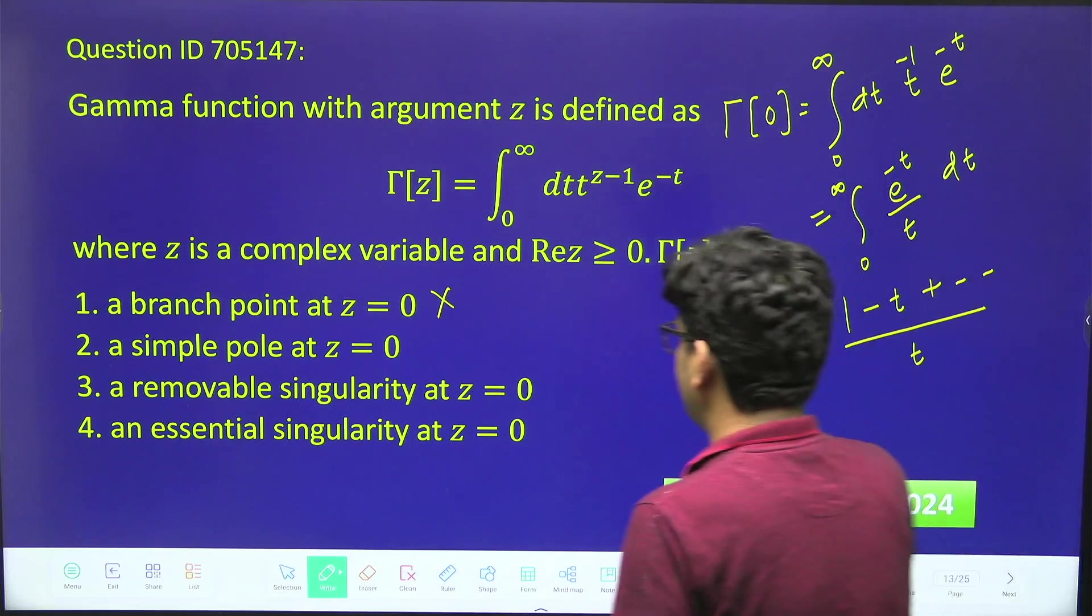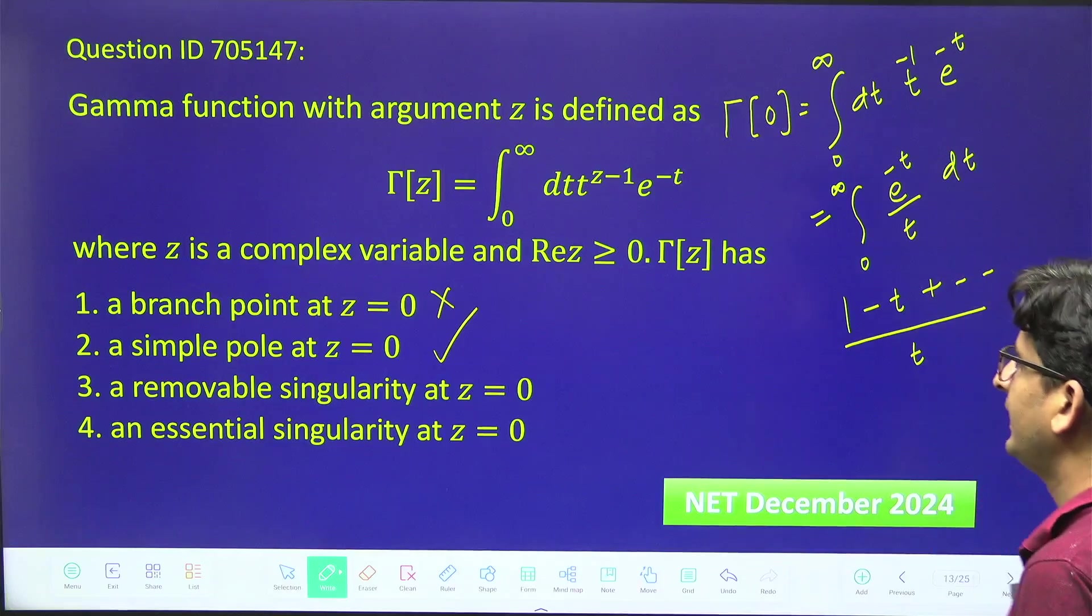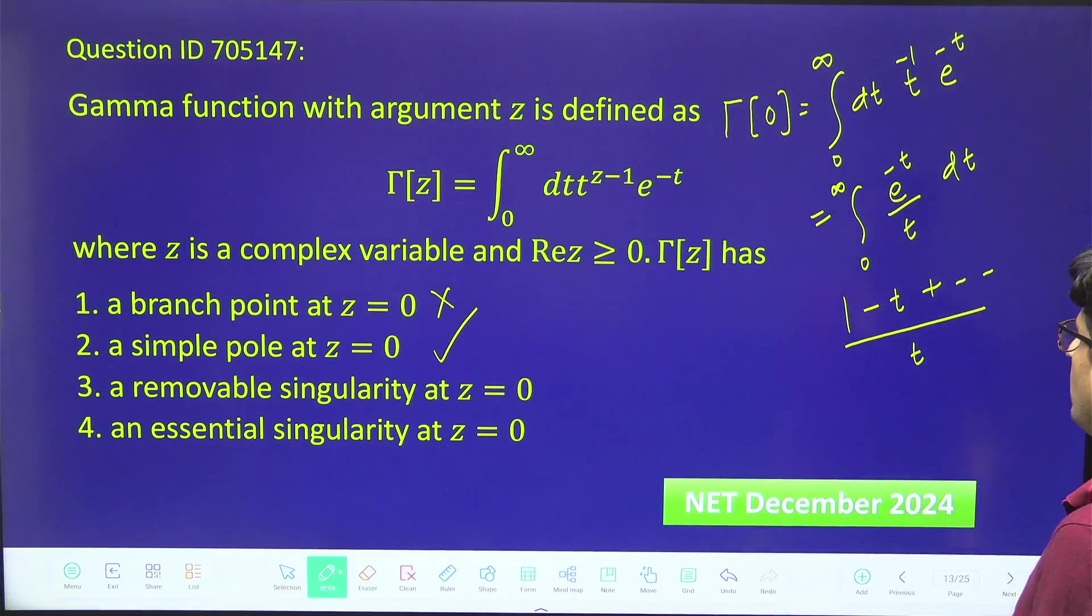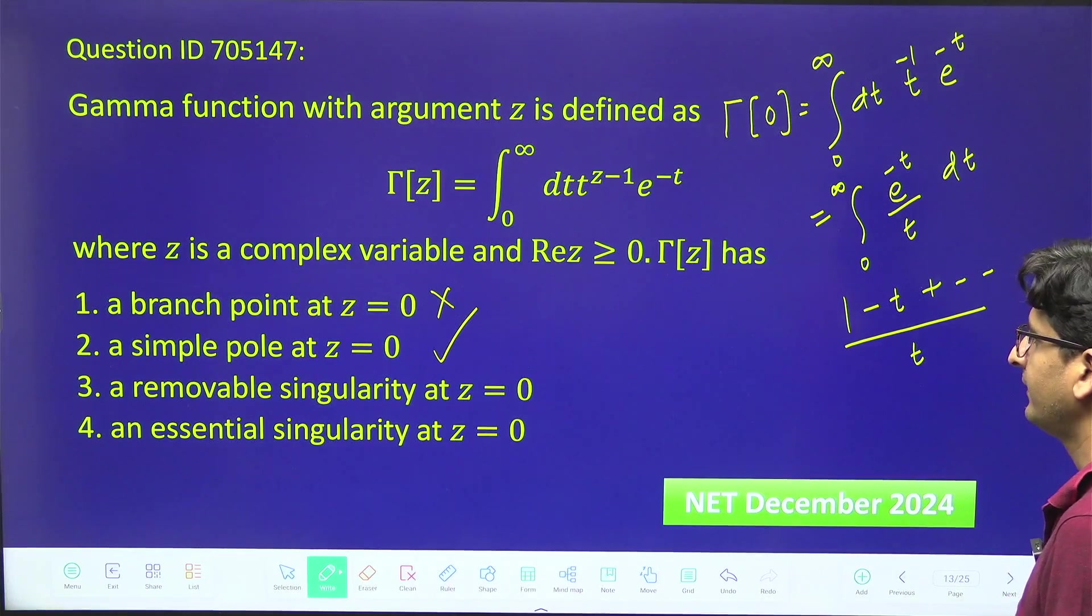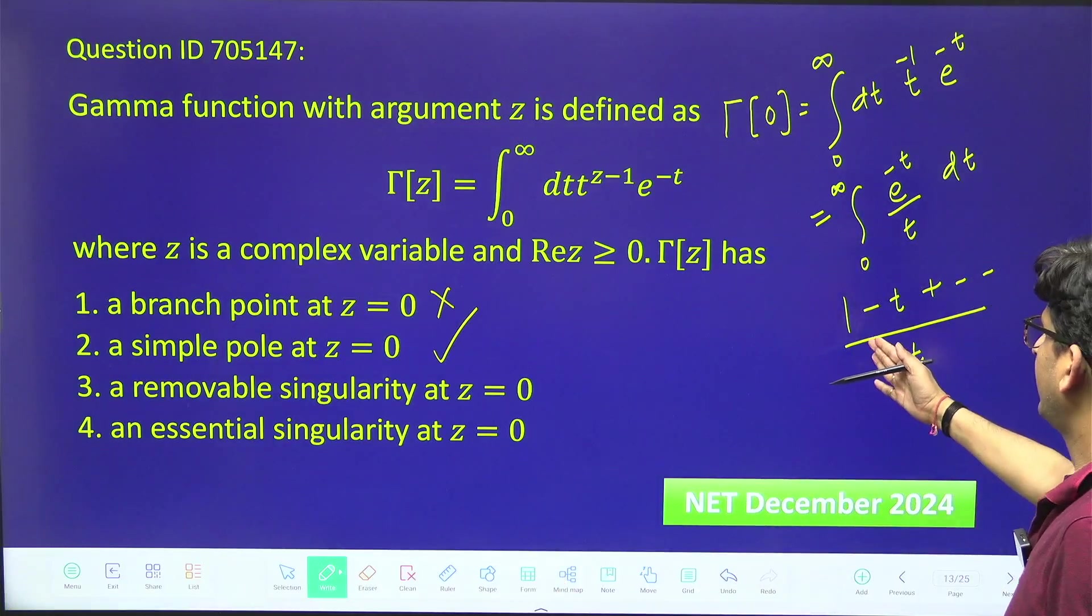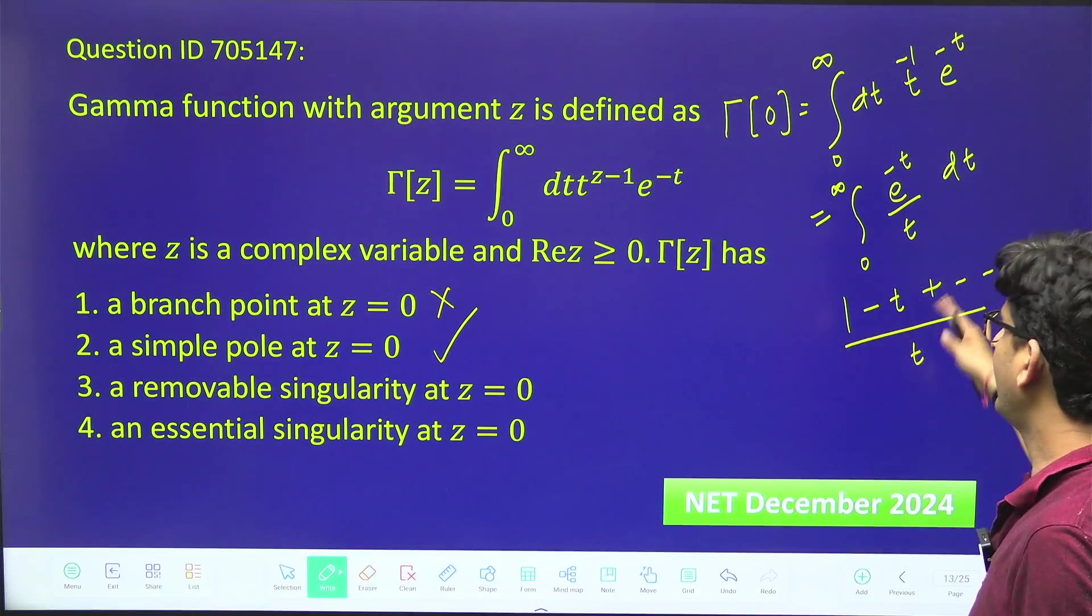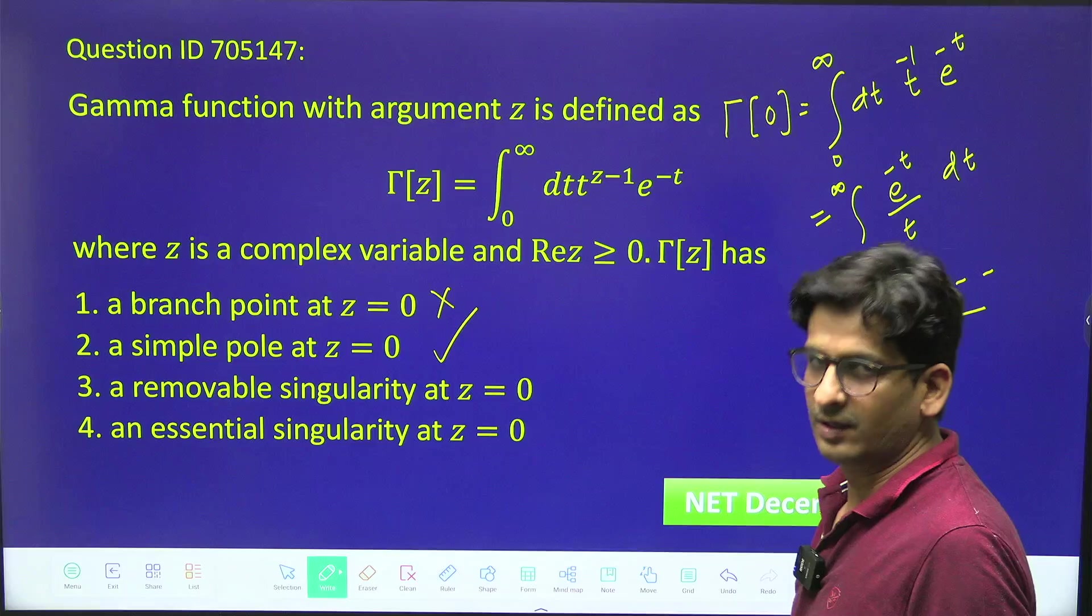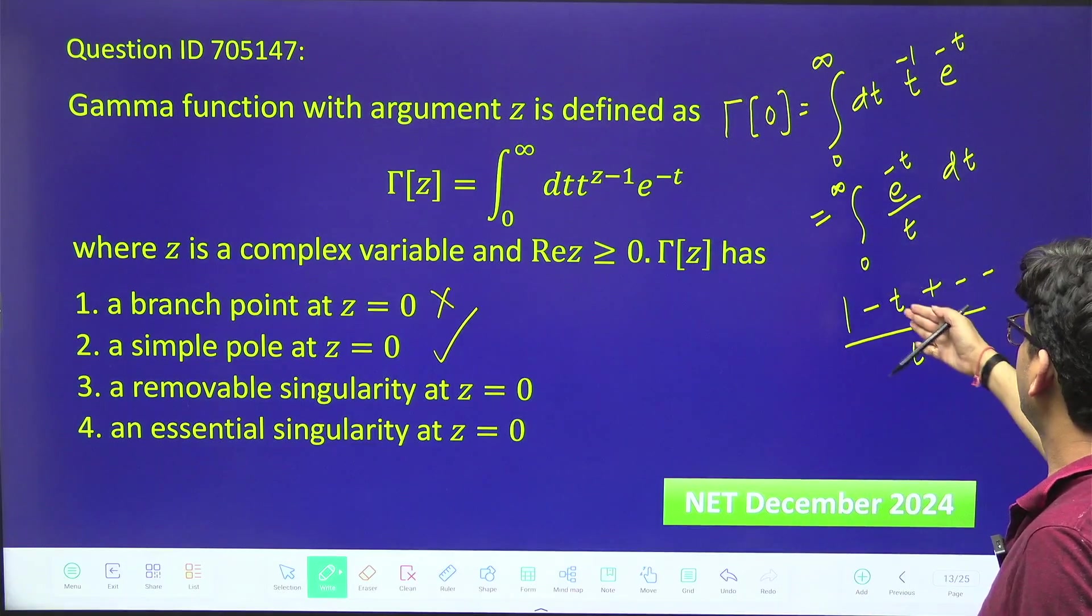Is it a removable singularity? No, because the first term is 1 by t, it is not a removable singularity. Is it an essential singularity? No, because there are not infinite numbers of terms in the non-analytic part of the Laurent series. Only one term is there; other terms are analytic like Taylor series.